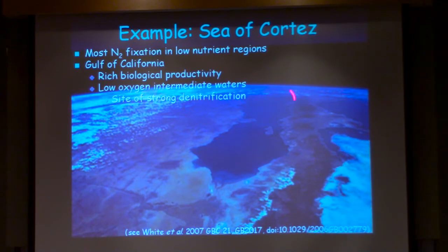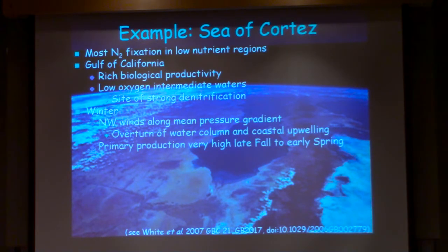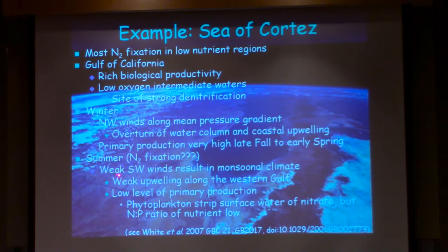Looking from north to south at the Gulf of California, with the Baja Peninsula on one side, the intermediate waters show evidence of denitrification supported by that high biological productivity. In the winter, northwest winds drive a mean pressure gradient that causes mixing, bringing nitrate from deep water to the surface and creating rich biological productivity. In the summertime, those winds relax, replaced by weak southwest monsoonal winds, resulting in weak upwelling and generally low levels of primary production in surface waters.